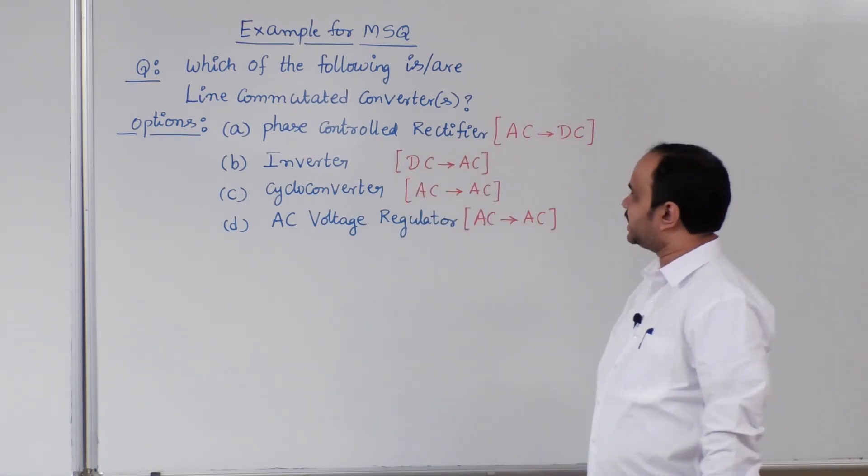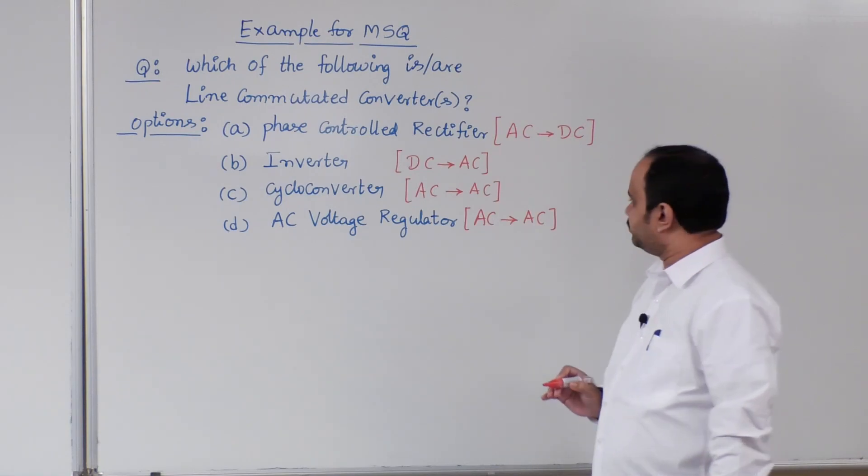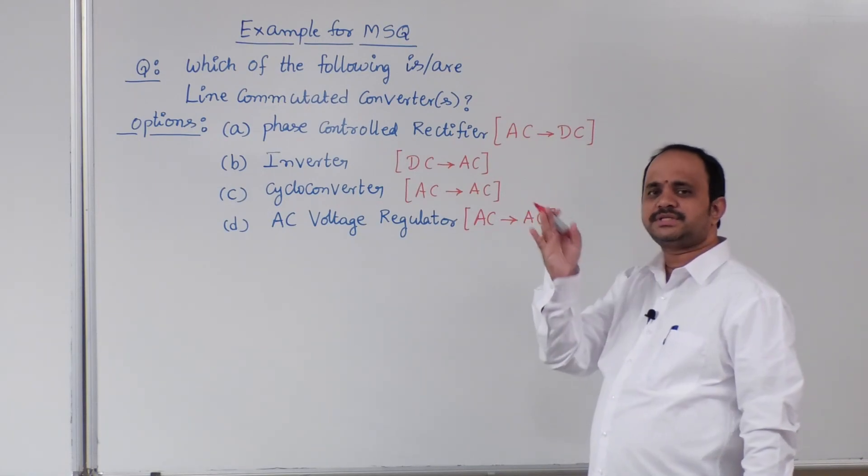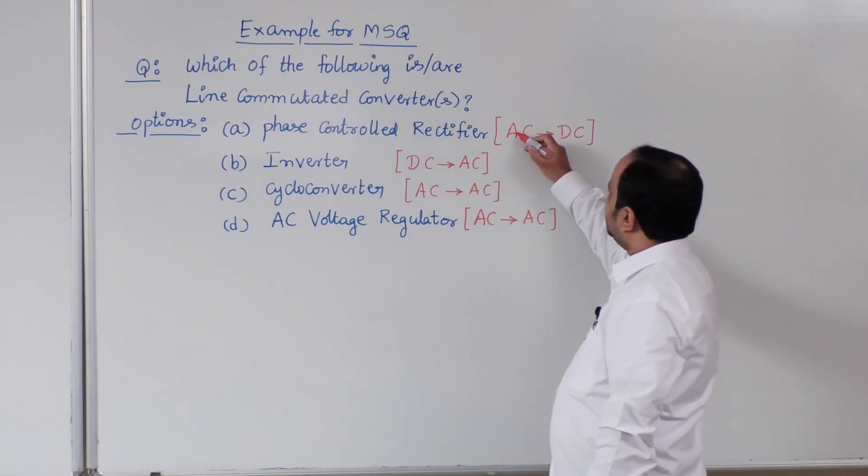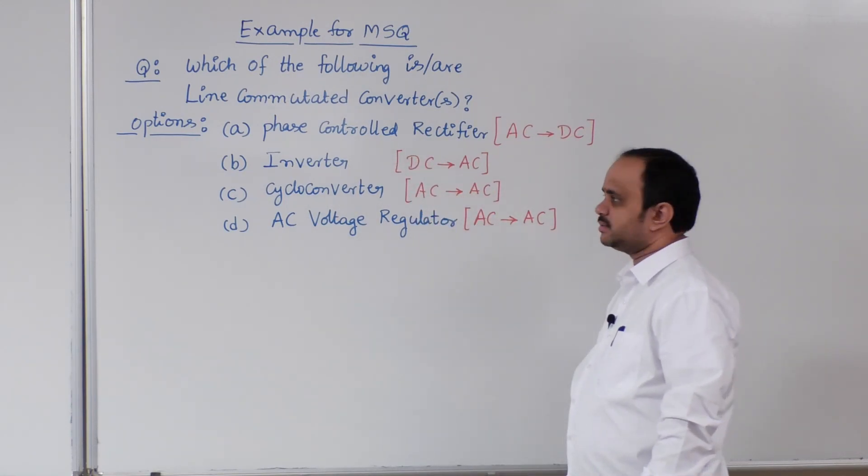Now, the reason for taking this question as an example. Generally, the student will feel that line commutation means whenever the source is AC. Therefore, our first thought could be, answer will be phase controlled rectifier, cycloconverter and AC voltage regulator.